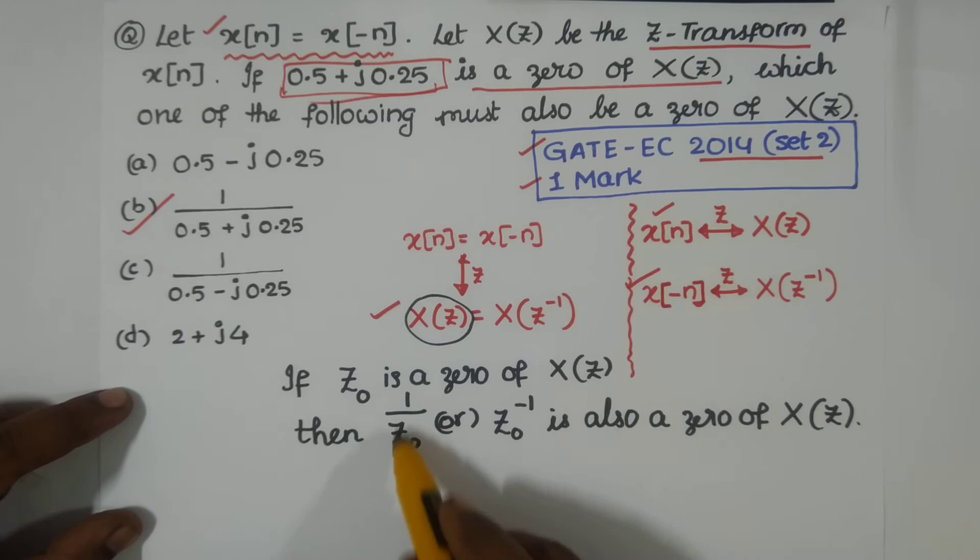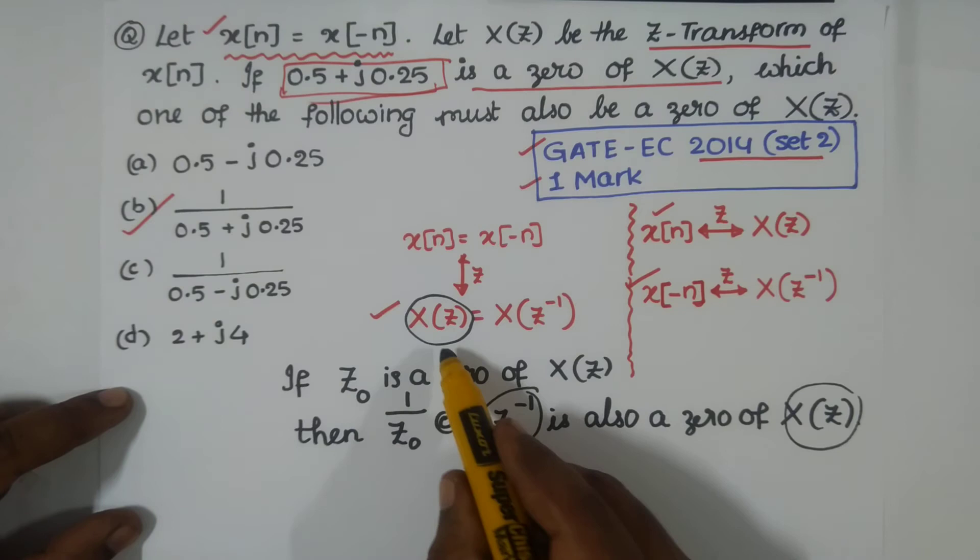It's also a zero of X(Z) because X(Z) equals X(Z^-1), so we can confidently accept this.